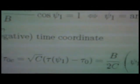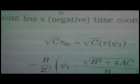The same point has a negative time coordinate, a negative time coordinate, square root c times tau 0, c.